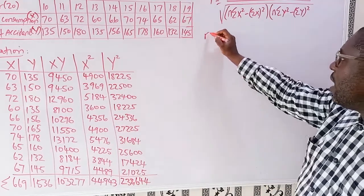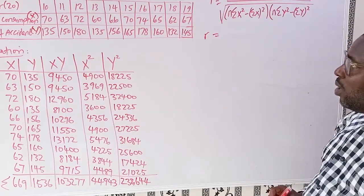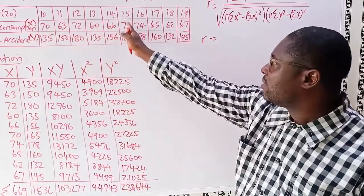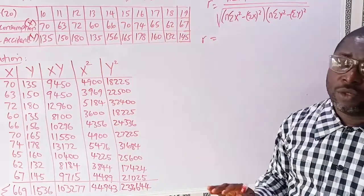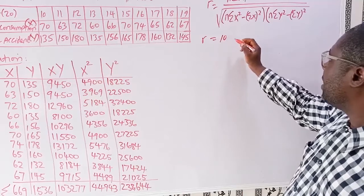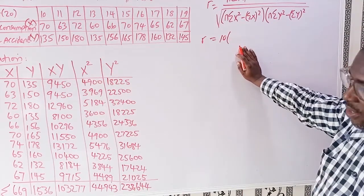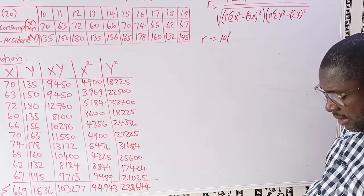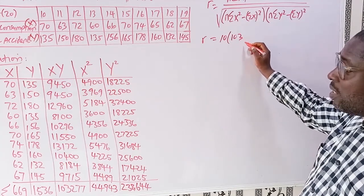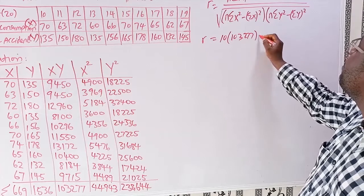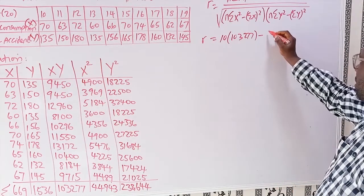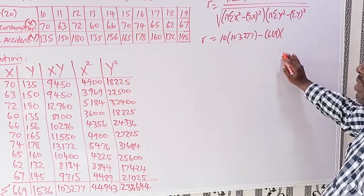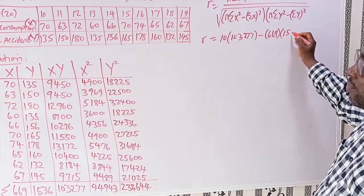Now we fill in the values. r equals n — let's count the entries: 1 through 10, so n equals 10 — times the summation of XY, which is 103,277, minus the summation of X, which is 669, times the summation of Y, which is 1,536. These figures all come from the totals in our table.